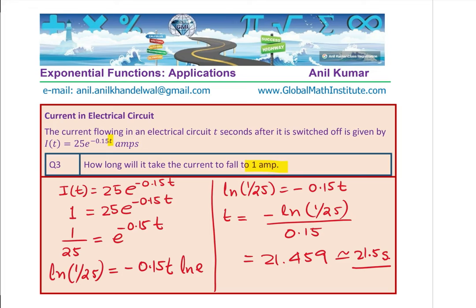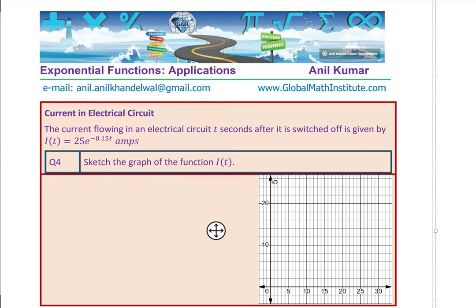The strategy here is to take natural logs (ln) on both sides, which helps you solve this type of question. Some of you can also use the graphing calculator to check the answer. We get 21.5 seconds for the current to reach 1 ampere.